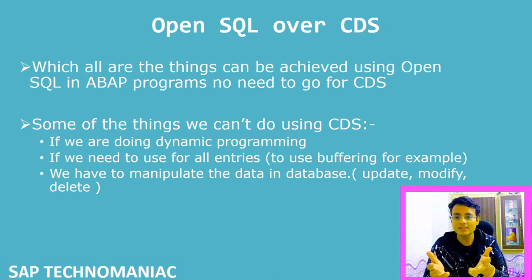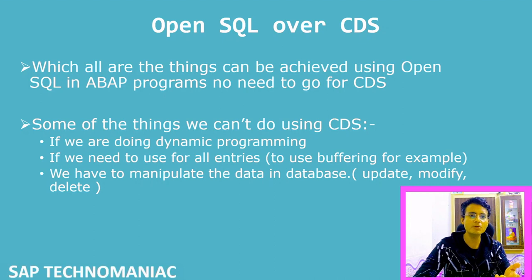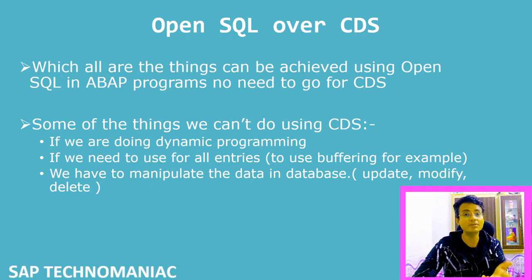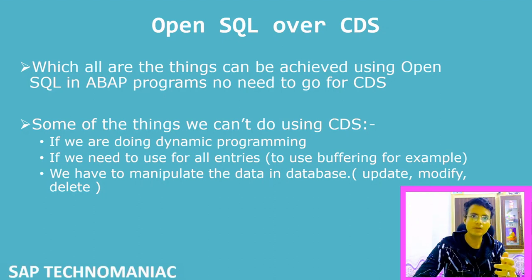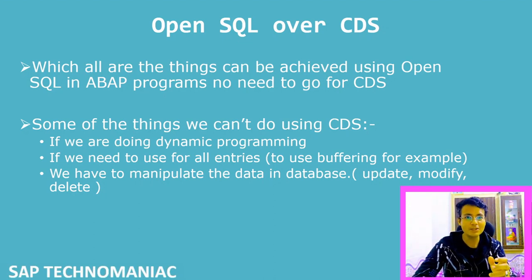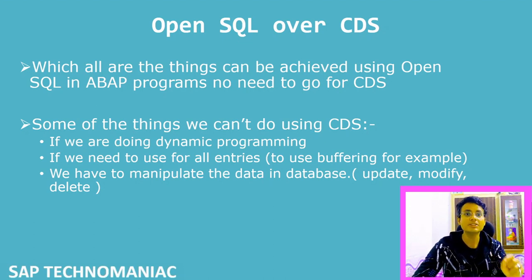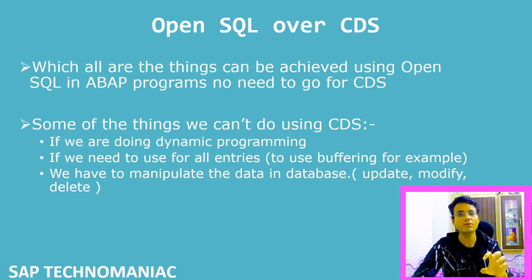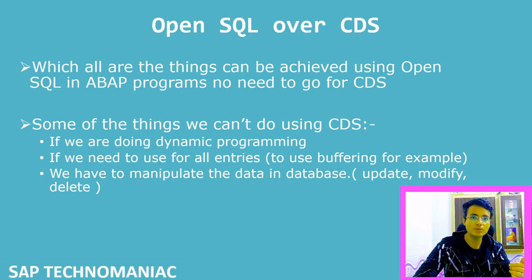This is a very important point when working day-to-day. Sometimes programmers just create joins without thinking. But you should think — if you use tools like the ABAP Cockpit or ATC, it will also give an error that you are joining a table which is buffered on the application server. You should not join those tables. You have to get data from buffered tables independently and then use FOR ALL ENTRIES.